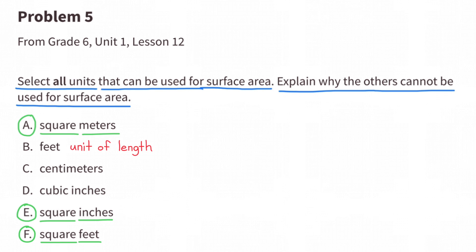B. Feet. Feet is a unit of length. It can't be used for surface area because length is just one dimension. And remember, it has to be two-dimensional, like length times height.